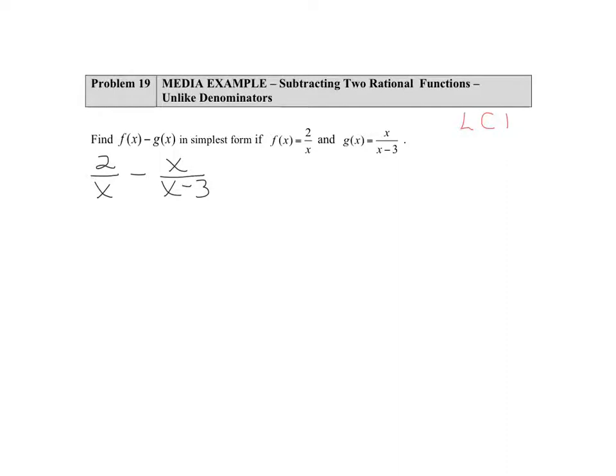So we'll go over here to the side and talk about the least common denominator of x and x minus 3. Now when you first look at these two, we would say well they both have an x, but the x in the second denominator is paired up with a minus 3.